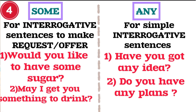Rule number 4: we use the pronoun 'some' in interrogative sentences, basically to make a request or an offer. Interrogative sentences are sentences with a question mark. For example, 'Would you like to have some sugar?' — 'any sugar' would be wrong here. So if you need to make a request or an offer, use 'some.' Another example: 'May I get you something to drink?' — 'anything to drink' would be inappropriate or incorrect.